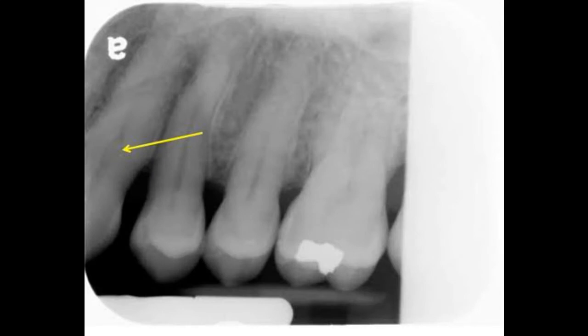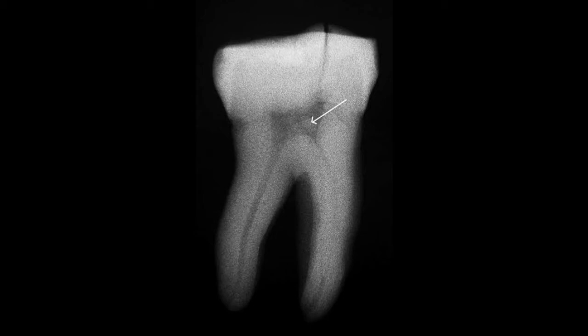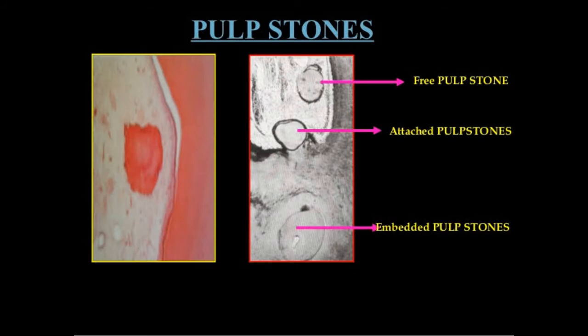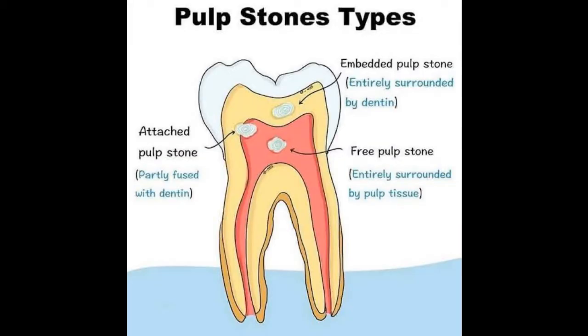Pulp stones begin to form around a nidus, that is around a focal region. They are initially small in size, gradually increase, and sometimes may fill the entire pulp chamber. Pulp stones are mostly asymptomatic and they are incidentally found while taking radiographs. Depending on the relation with dentin, the pulp stones may be grouped as free, attached, or embedded. The free pulp stones are present in the pulp surrounded by the pulp tissue, and gradually as the secondary dentin formation continues, these pulp stones get attached to the dentinal wall. This is called attached pulp stone, and when it is fully engulfed by the dentin, it is called an embedded pulp stone.